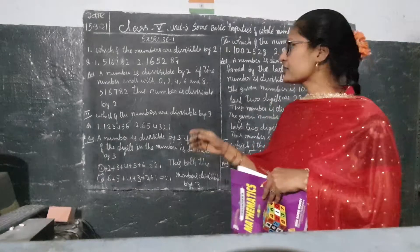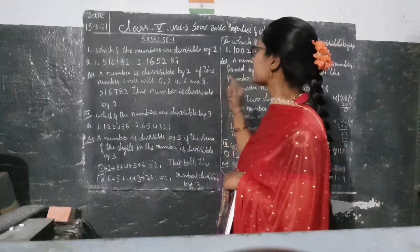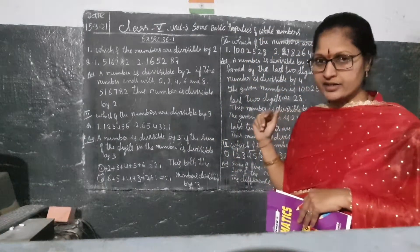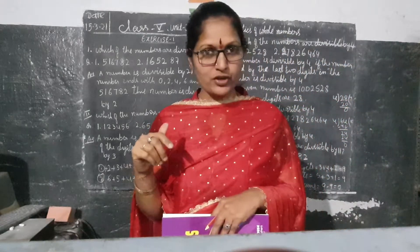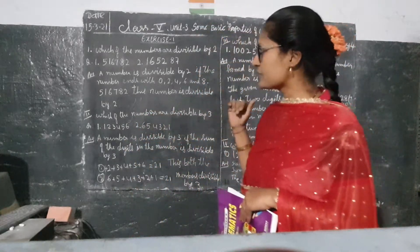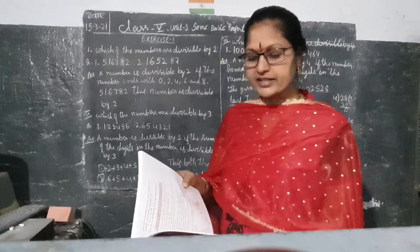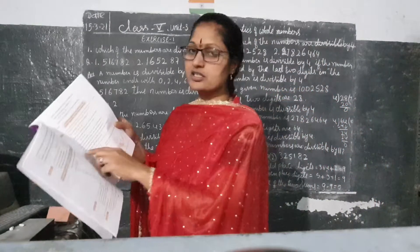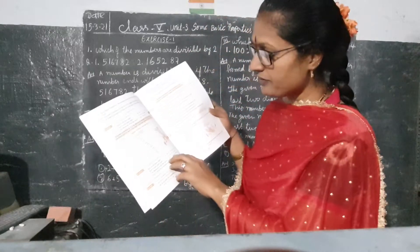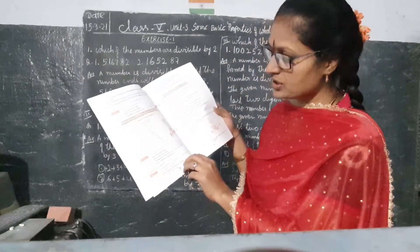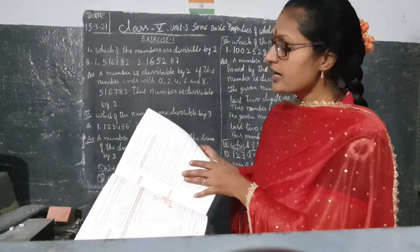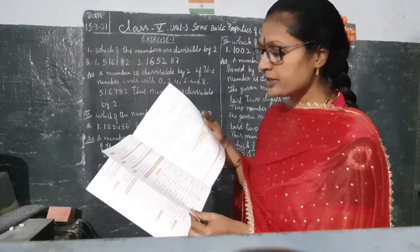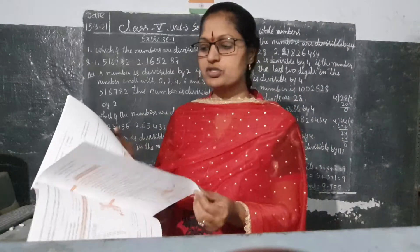Good morning, children. Now I will explain for you Class 5, Unit 3, some basic properties of the whole numbers. In previous classes also I explained for you. Now I will explain for sums. You have to write the Class 4 examples. There are divisible by 11 sums and all we have to write. Till example 13 we have to write. Now all the sums we have to do.